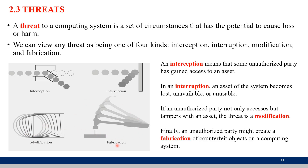The fourth kind of attack is fabrication. Fabrication means the attacker itself is going to create some data and send it to the receiver in the name of the original sender. The attacker inserts the name of the sender and gives it to the receiver. Unauthorized persons create their own data and send it. So, these are the four different kinds of threats: interception, interruption, modification, and fabrication.